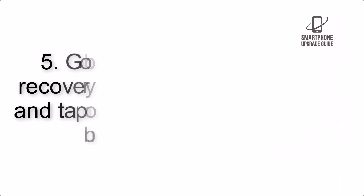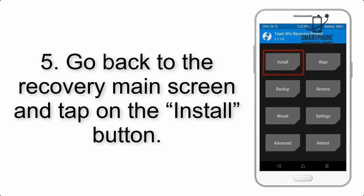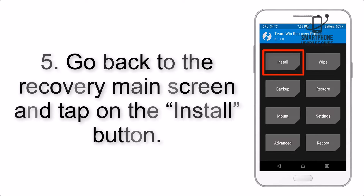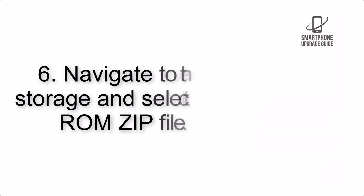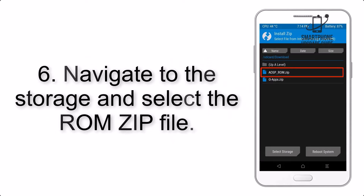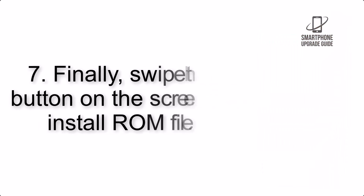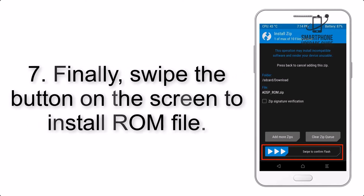Step 4: Swipe the button to wipe the device. Step 5: Go back to the recovery main screen and tap on the Install button. Step 6: Navigate to the storage and select the ROM zip file.